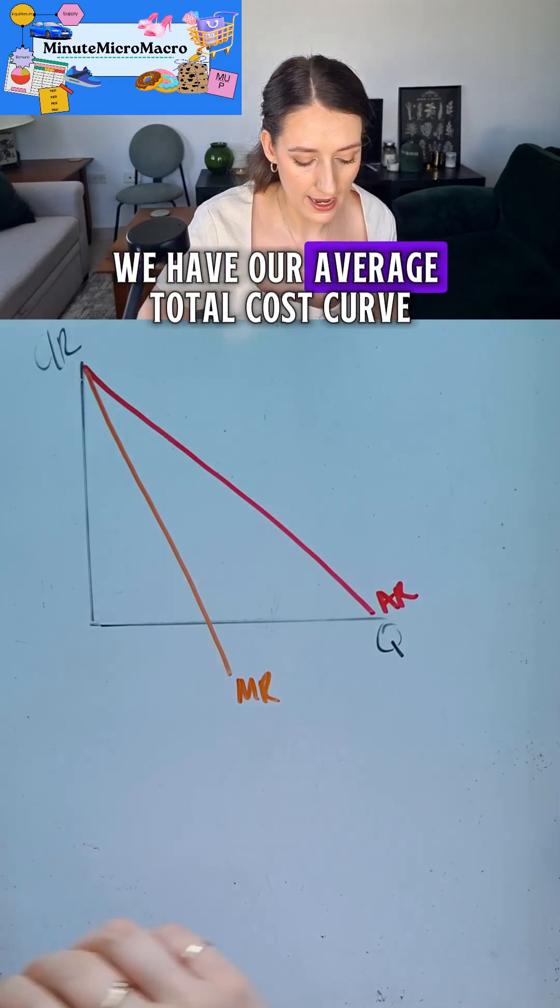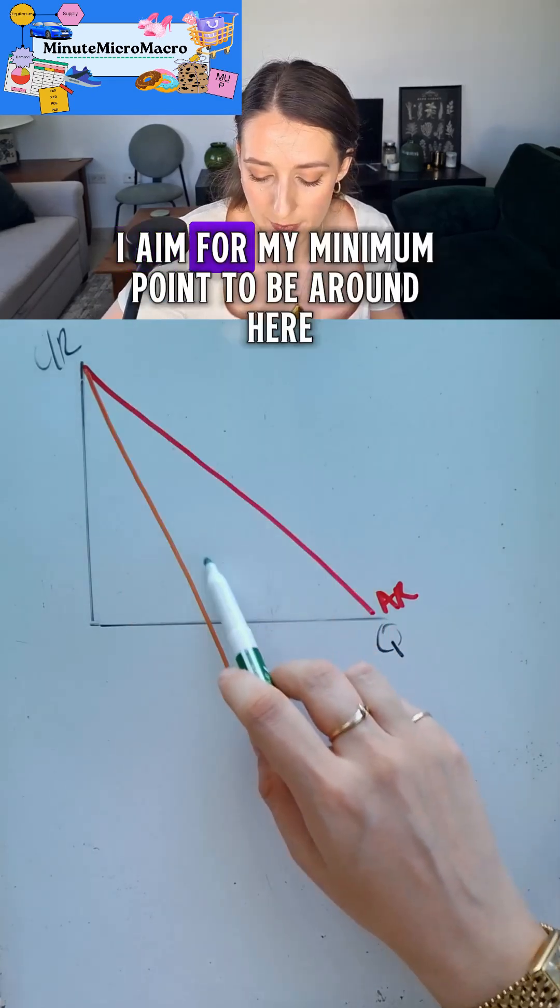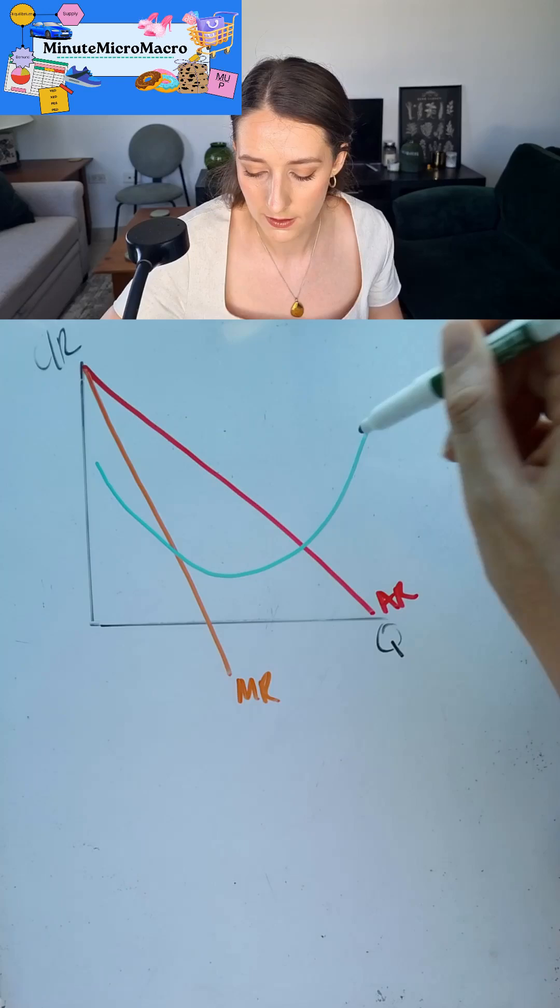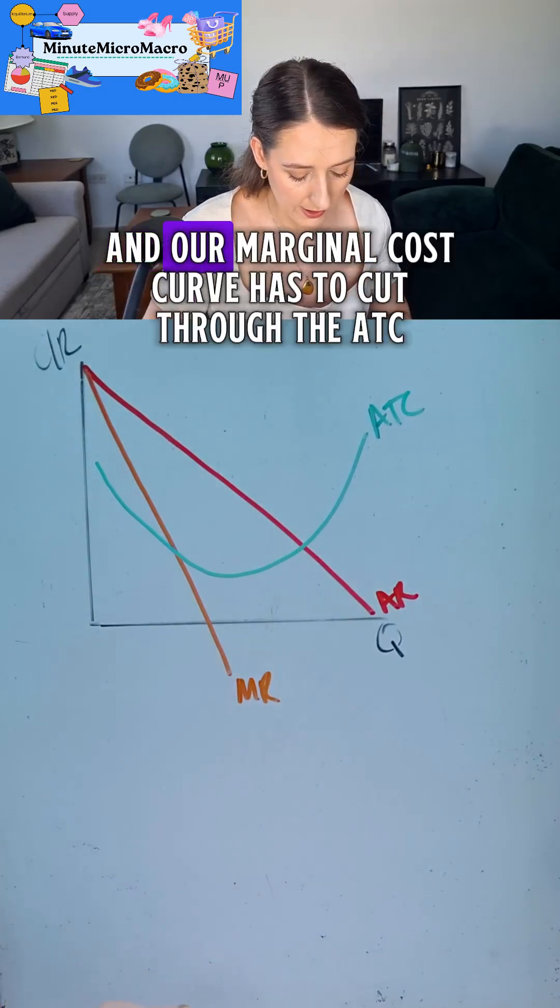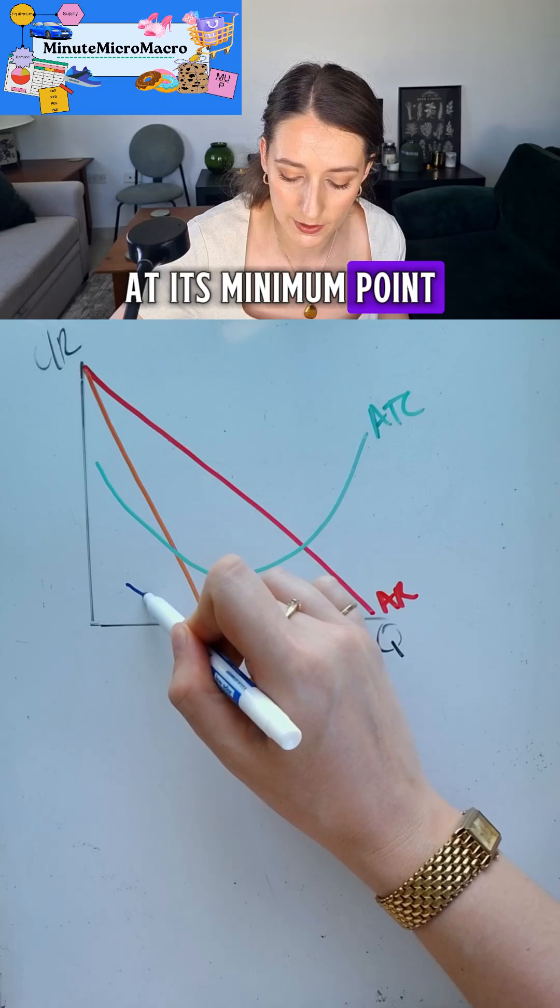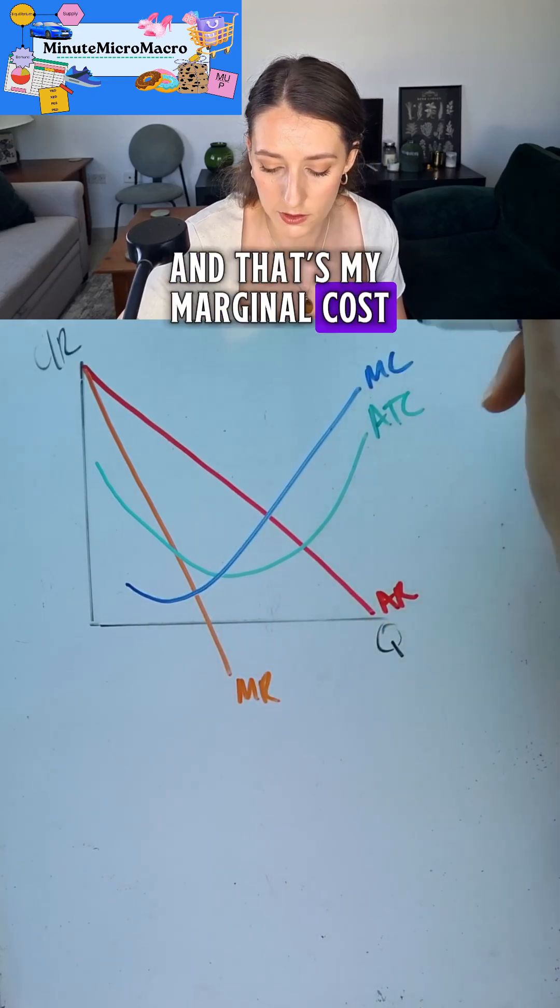We have our average total cost curve. I aim for my minimum point to be around here to give me lots of space. Average total cost and our marginal cost curve has to cut through the ATC at its minimum point and that's my marginal cost.